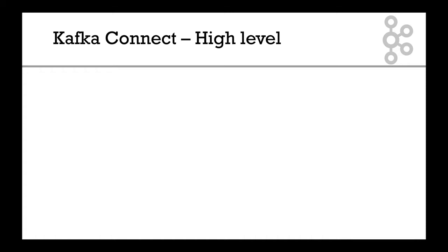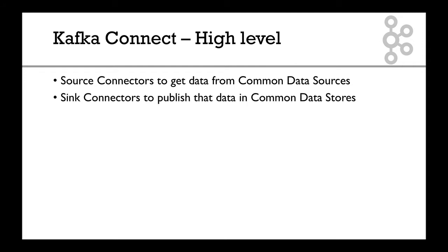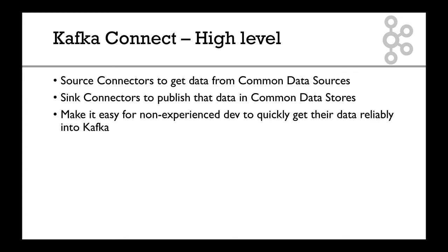We've seen the principle of Kafka Connect, a bit of theory, now we're going to get more details around what it is. But let's start at a high level, just to summarize. We get source connectors to get data from the common data sources, and we have sink connectors to publish data to these common data sources. It makes it really easy for non-experienced devs, just like us, to quickly get their data reliably into Kafka and out of Kafka.